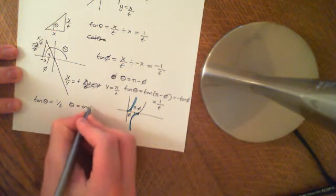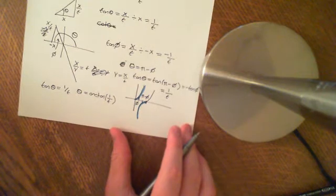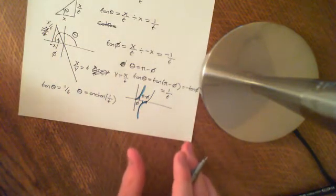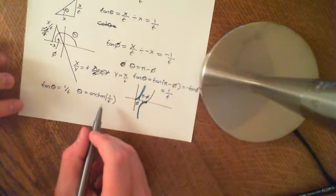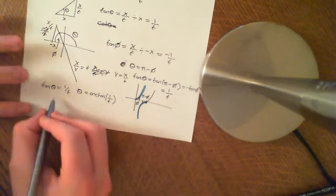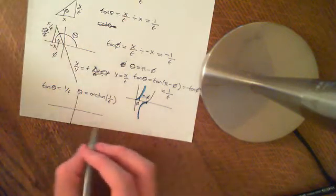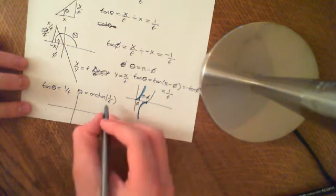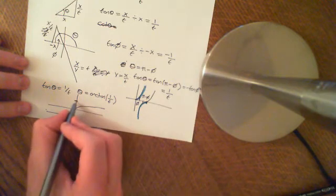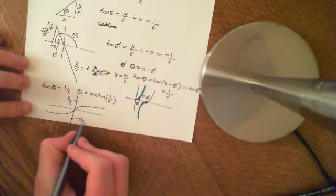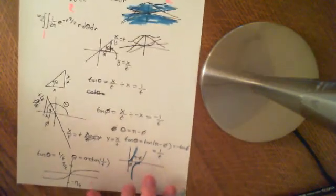We therefore have θ(t) = arctan(1/t). However, there is potentially a problem: arctan is generally defined to map between −π/2 and π/2. That's going to be a problem if we just substitute it in here directly. We'll continue this in the next video.